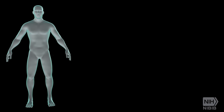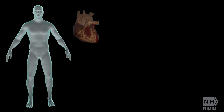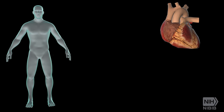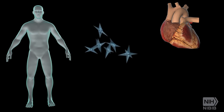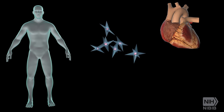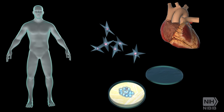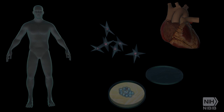The cells can be directly harvested from the target organ, developed from precursor or stem cells, or taken from lines grown in the lab — all ideally from the patient, as that limits problems with rejection.